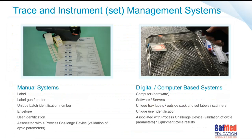Generally speaking there are two main types of tracking and tracing systems: manual systems and digital computerized systems. Manual systems consist of label guns, printers, envelopes, some form of user identification, and all of this needs to be associated with the process challenge device to validate sterilization cycle parameters. Digital computerized systems need a computer, hardware, software, data storage, a way to uniquely identify the tray, a label on the outside, a scanner, and unique user identification — again associated with the process challenge devices.